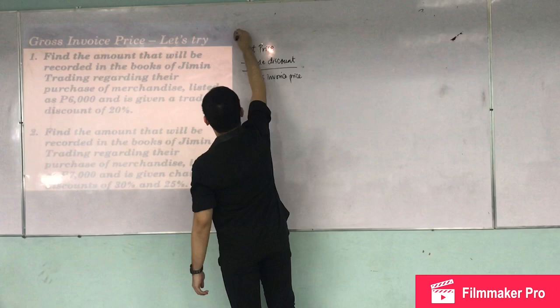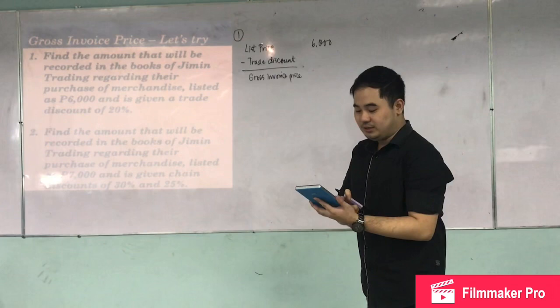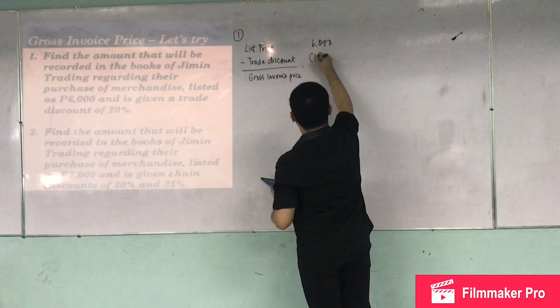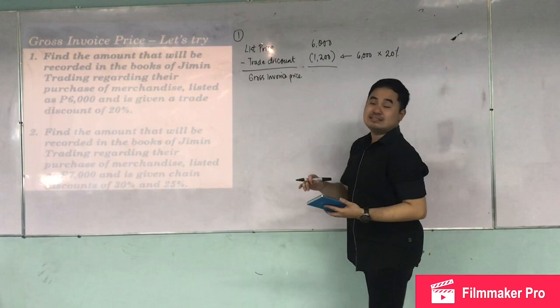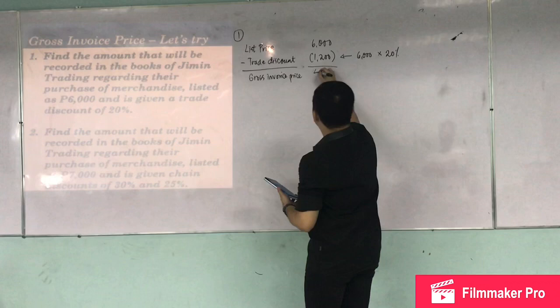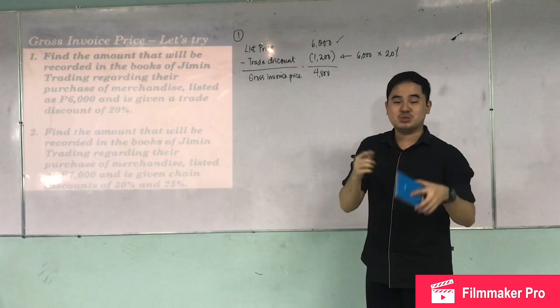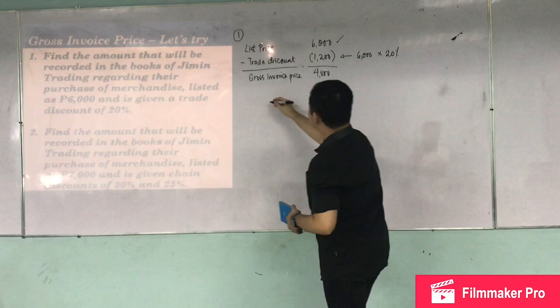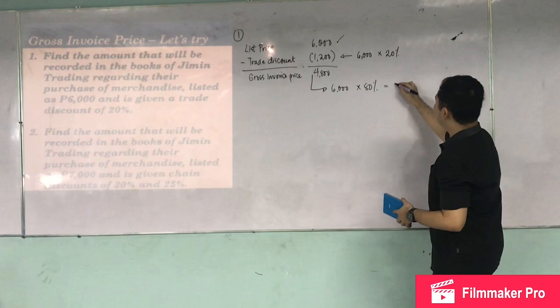Using the formula for number one: the list price is 6,000 and the trade discount is 6,000 times 20 percent, which equals 1,200. So 6,000 minus 1,200 gives a gross invoice price of 4,800. Another approach is to multiply 6,000 by the complement percentage — 100 minus 20 equals 80 percent — so 6,000 times 80 percent also gives you 4,800.